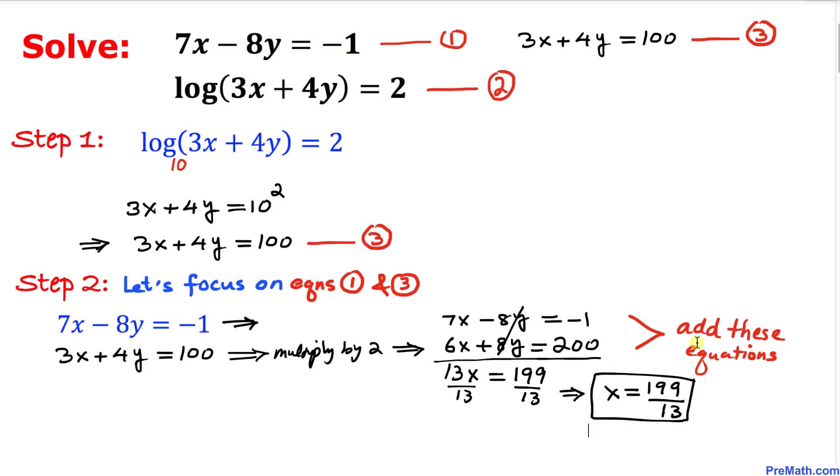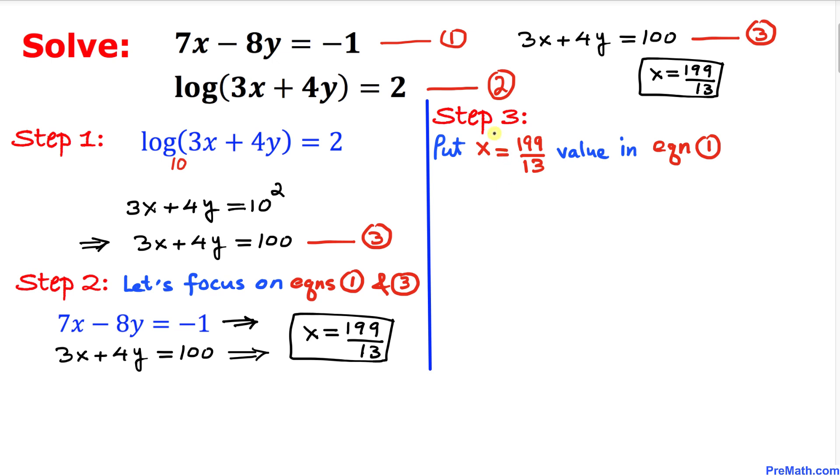So this is our x value. Here's our next step. Let's put this x equals 199 divided by 13 value in equation 1. Here I have copied down equation number 1.